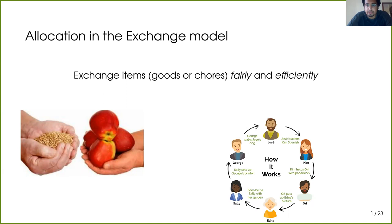This talk is concerned with allocations in the exchange model. The exchange model is a fundamental economic model built on the barter system, where a set of agents exchange a set of items among themselves fairly and efficiently. This involves agents maximizing their utility while exchanging goods, and minimizing their disutility while exchanging bads or chores. I will make the settings more formal and explicit as the talk progresses.